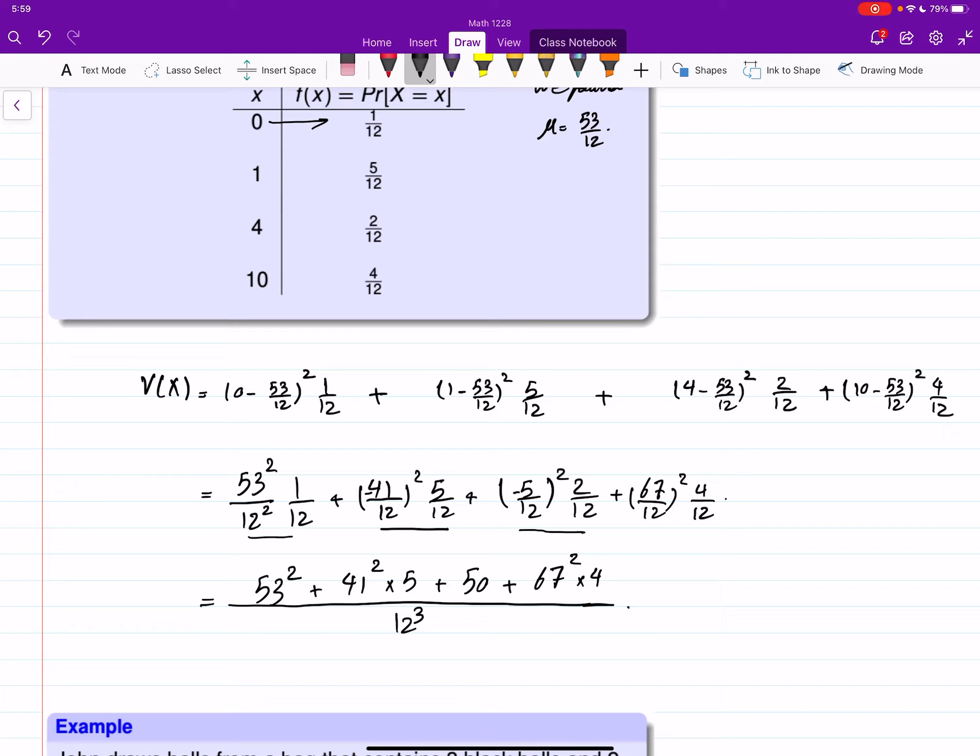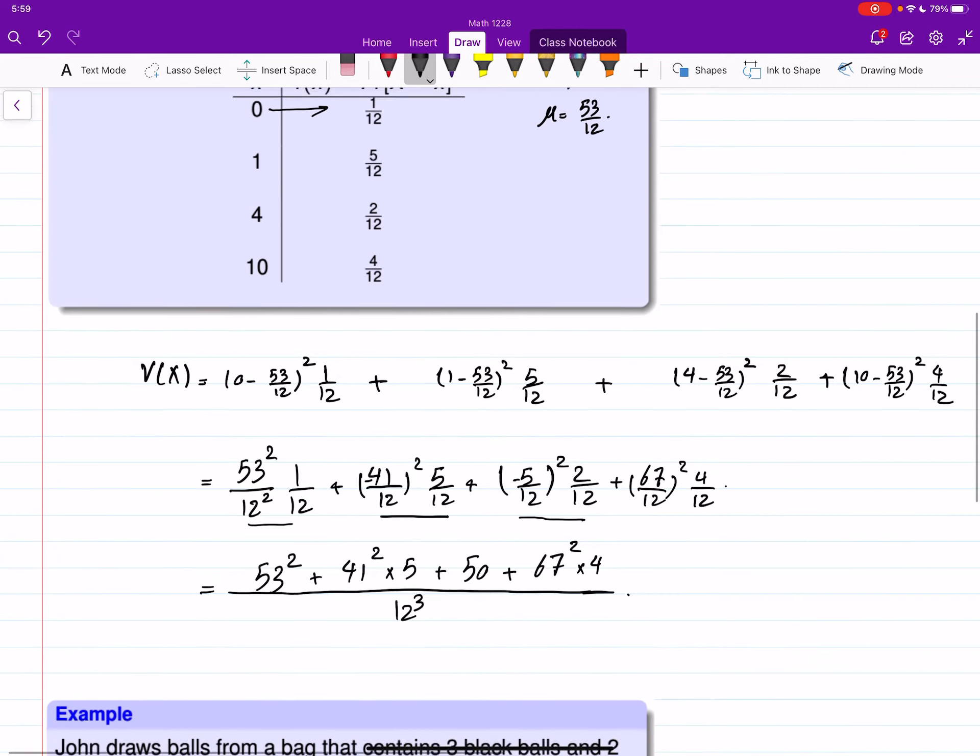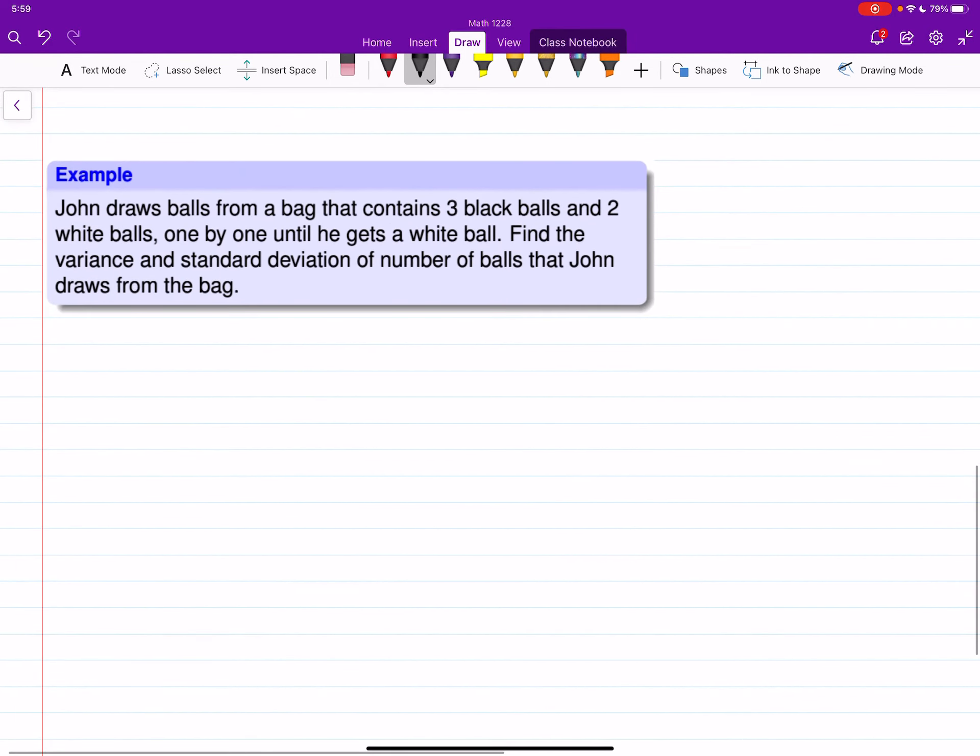How about this one? John draws balls—this example is coming with us for a long time so I will try to do that one here again. The values, the number of balls drawn by John, could be 0, 1, 2, or 3, and the pdf values there are 2 over 5, 3 over 10, 1 over 5, and 1 over 10. We have to first find μ. We did it in an example before and found μ equals 2.